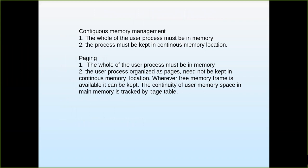In the previous memory management approach — contiguous memory management — the rule is that the whole user process must be in memory. For example, if a user process needs 50K of memory for execution, that much space must be available in main memory, and it must be in a continuous memory location. These are the two constraints of contiguous memory management.